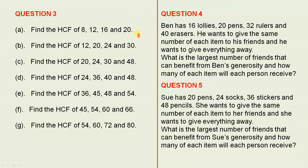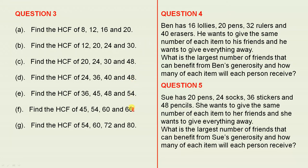Question 3: Find the HCF of 8, 12, 16, and 20. You can see here that we have four numbers for each question, so it's a little bit more challenging, but the idea is exactly the same — find the HCF, the highest common factor, for each of those questions.